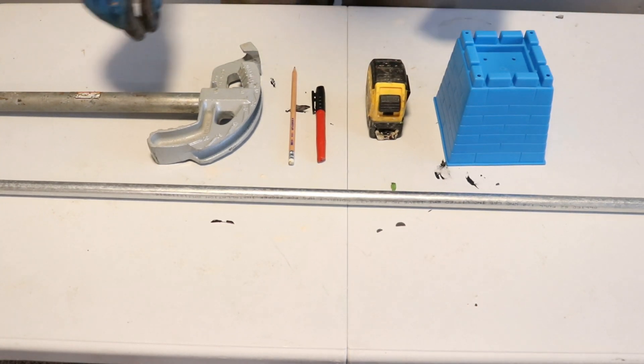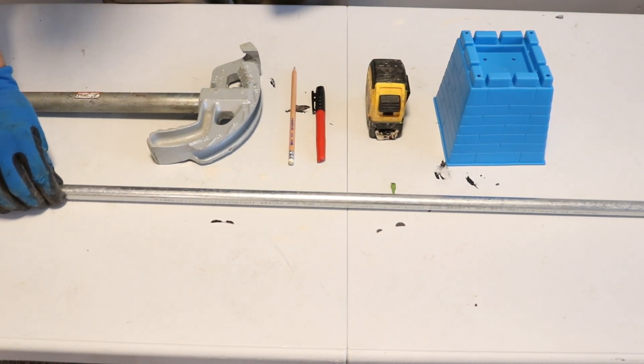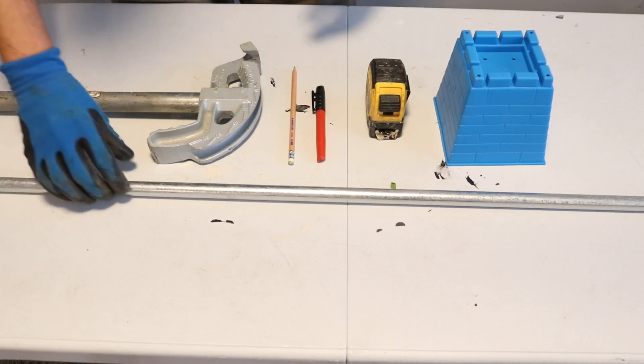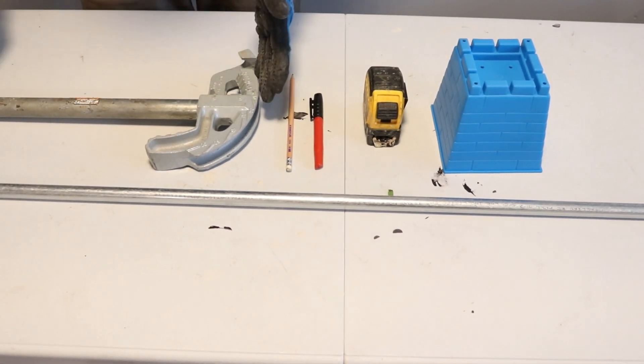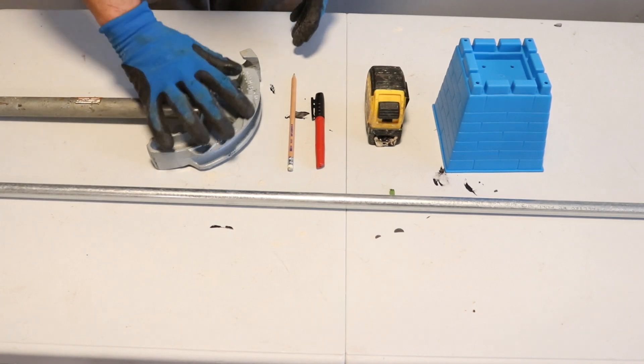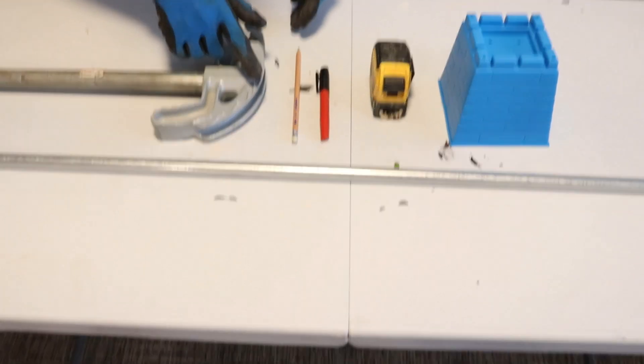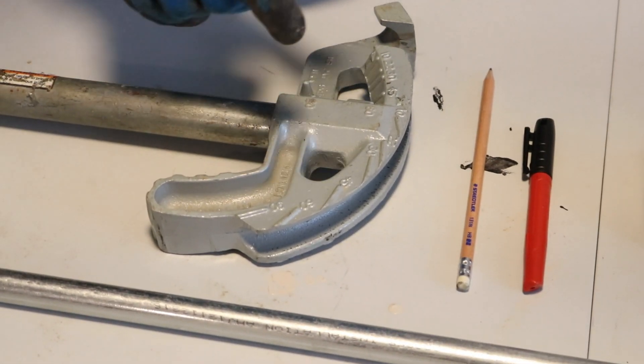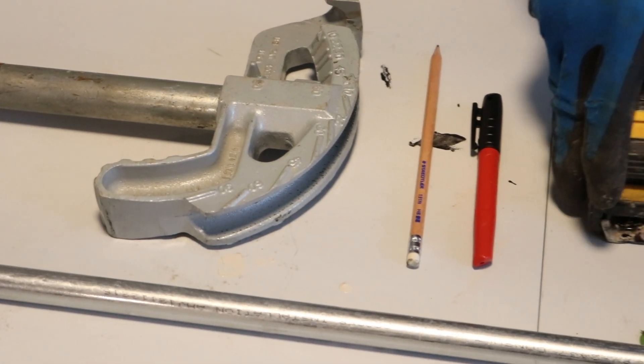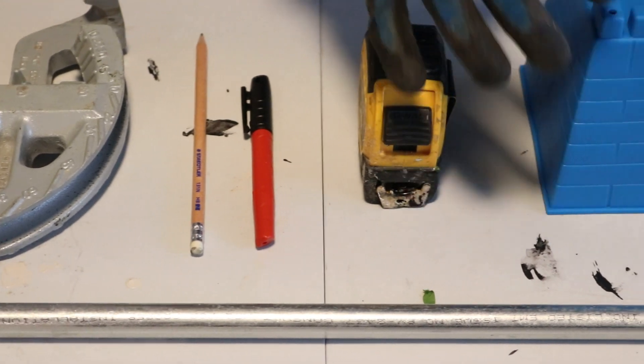Alright. So we got a half-inch EMT conduit. It's about five feet length. I got a bender. My bender has 10-degree, 22-degree, 30-degree, 45-degree, 60, and 90-degree. I got my measuring tape and that's my obstacle.